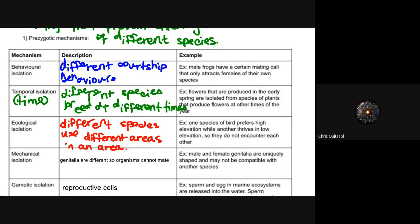One mechanism is behavioral isolation. They have different courtship behaviors. Male frogs have a certain mating call that attracts females of their own species. Different species have different types of courtship behaviors. That behavioral isolation contributes to the difference among species in that gene pool.